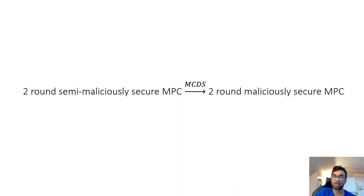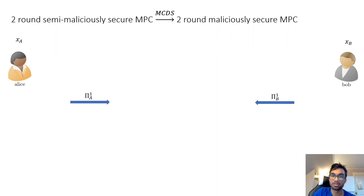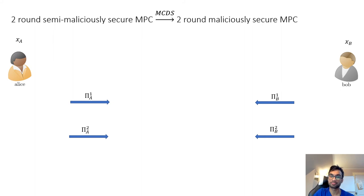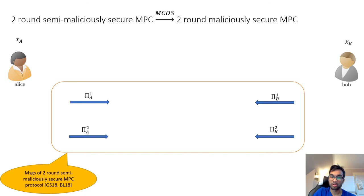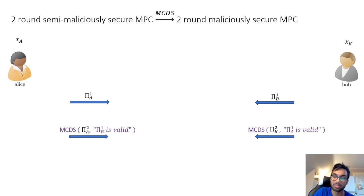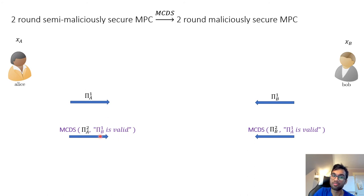Now I'll show how to go from a two-round semi-maliciously secure MPC protocol to a two-round maliciously secure protocol using the MCDS primitive. The basic structure of any two-round semi-maliciously secure MPC protocol has parties exchange first-round MPC messages in round one and second-round MPC messages in round two. We take such a protocol and condition the transfer of the second-round MPC messages using an MCDS box, conditioned on the fact that the first-round message of the other party was valid.